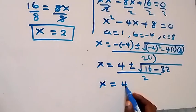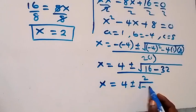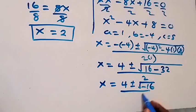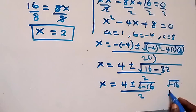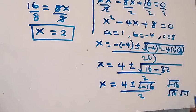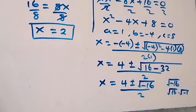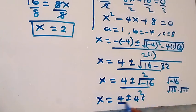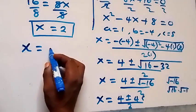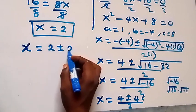We have x equals 4 plus or minus square root of minus 16, all over 2. The square root of minus 16 is the same as square root of 16 times square root of minus 1, which is 4i. So x equals 4 plus or minus 4i, all over 2.